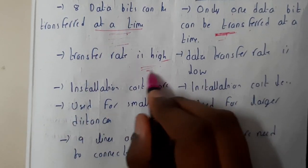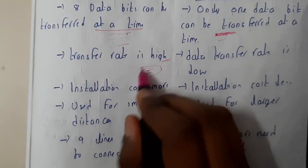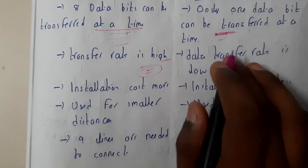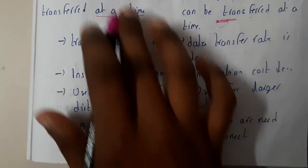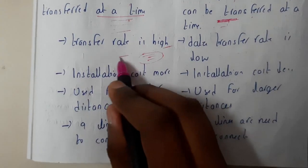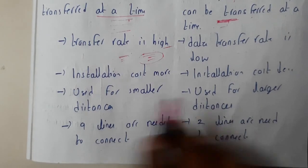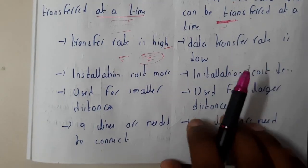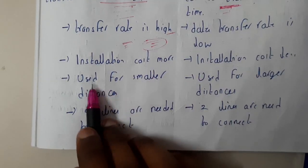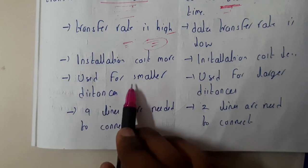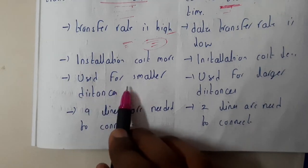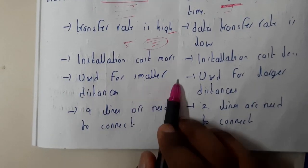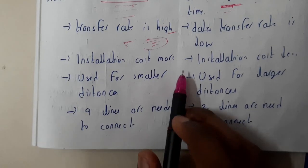The transfer rate in parallel communication is high because we will be sending eight bits at a time, so this is faster. In serial communication, we will be transmitting one bit after the other, so it is slow. The initialization cost in parallel communication is more because we need to have eight dedicated lines, whereas in serial communication the initialization cost is less because we will be using only a single line.